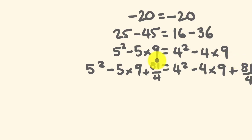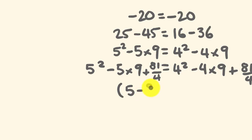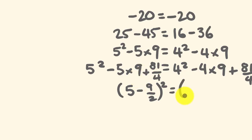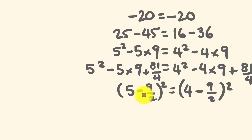Now I'm going to factorize this equation. Putting it in brackets, I get 5 minus 9 over 2, squared, equal to 4 minus 9 over 2, squared. I don't know if you've spotted a problem yet.